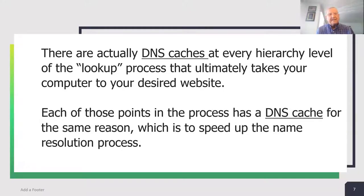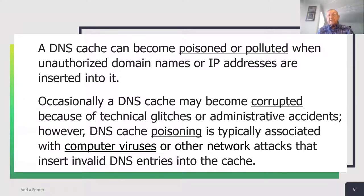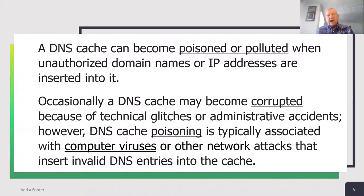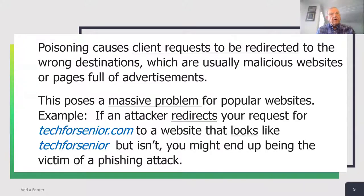A DNS cache can become poisoned or polluted when unauthorized domain names or IP addresses are inserted into it. Occasionally a DNS cache may become corrupted because of technical glitches or administrative accidents. However, DNS cache poisoning is typically associated with computer viruses or other network attacks that insert invalid DNS entries into the cache.